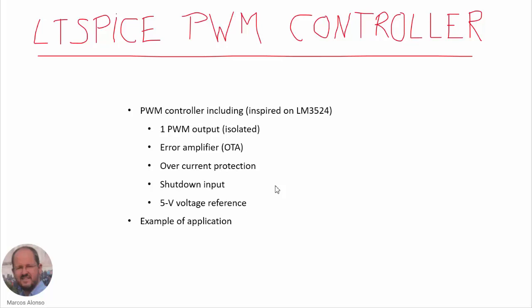Hello everyone, welcome to this presentation. In this video we are going to see how to implement a PWM controller for LTSpice. The outline includes implementing a PWM controller with one isolated PWM output, one error amplifier which will be an OTA transconductance amplifier, overcurrent protection, and an input to implement the shutdown of the output, and a 5-volt voltage reference.